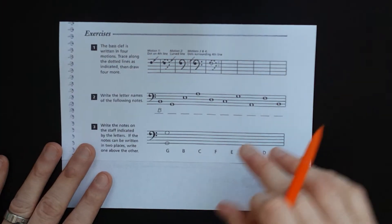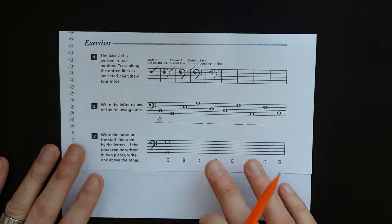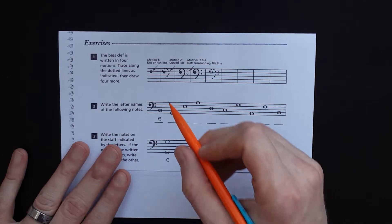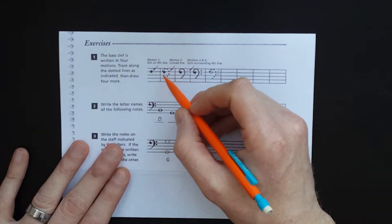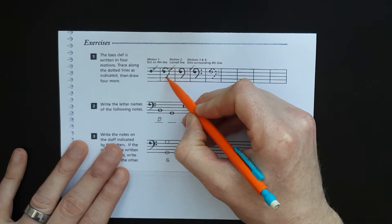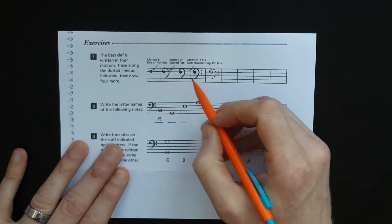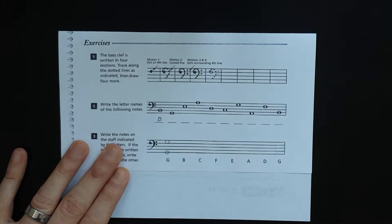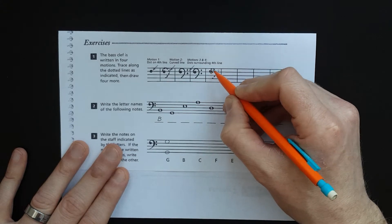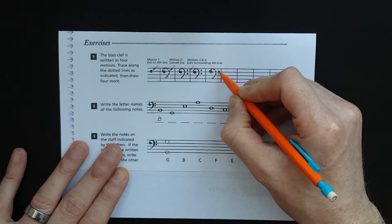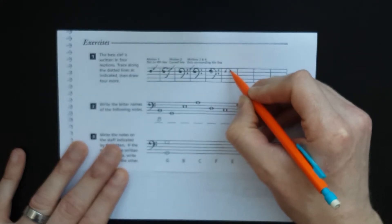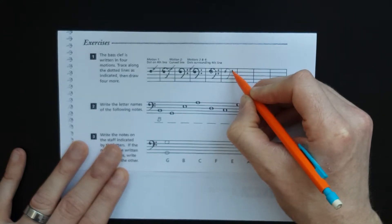Flipping over to the exercises, the bass clef is written in four motions. Trace along the dotted lines as indicated, then draw four more. You start with a dot, then make a swish that goes down to the second line, and then for the third and fourth motions you make the two dots.